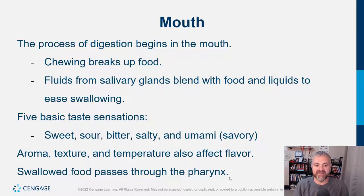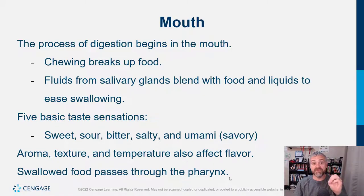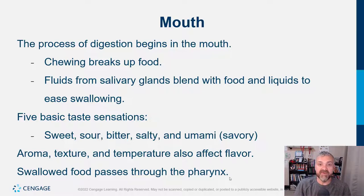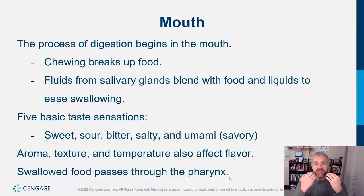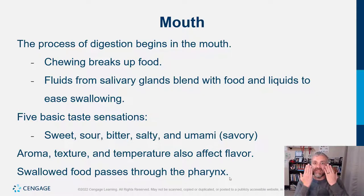Taste, aroma, texture, and temperature all affect flavor. The smell of your food actually has a much bigger impact on its flavor than you'd imagine. Taste is purely the combination of sweet, salty, sour, bitter, and umami — which is a savory flavor. But flavor overall — some would say ninety percent — is things like aroma and texture. One neat thing: while you're chewing your food, you're smelling it from the inside of your nose. Those odorants are actually entering your nostrils internally and reaching your nose that way.